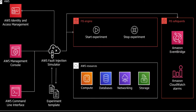In Fault Injection Simulator you create an experiment template, where you define an experiment. That experiment consists of an action — what kind of fault you want to inject, such as stopping an EC2 instance, stopping an RDS instance, or increasing CPU or memory utilization. The target specifies on which resource you want to perform the action, for example, which EC2 instance you want to stop.